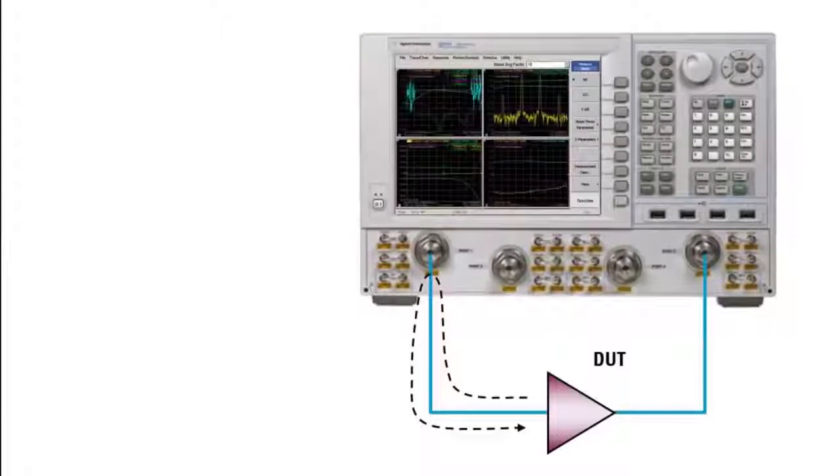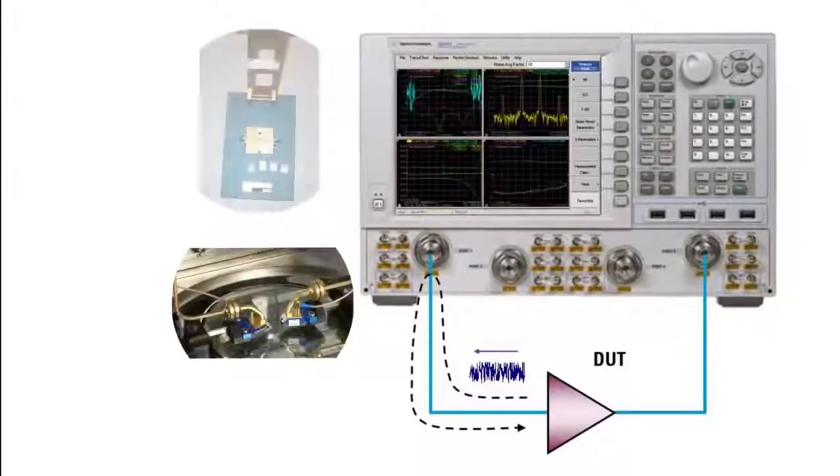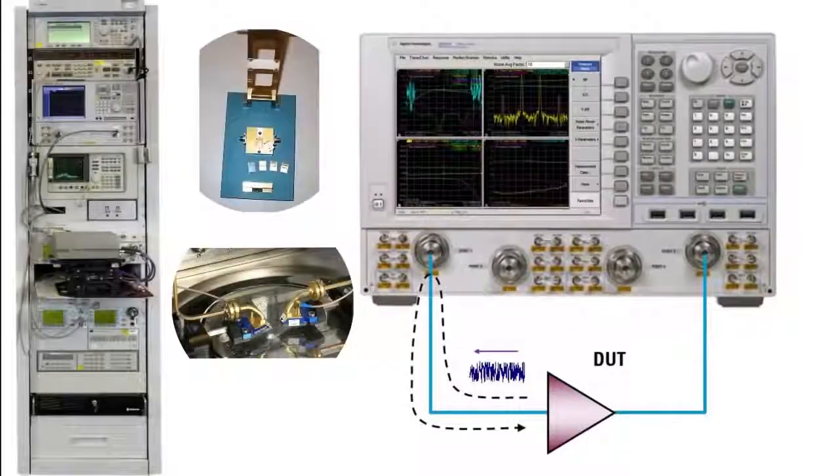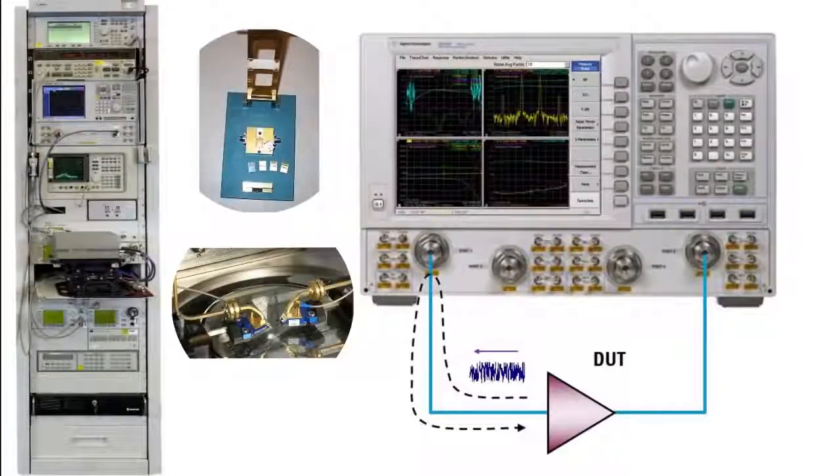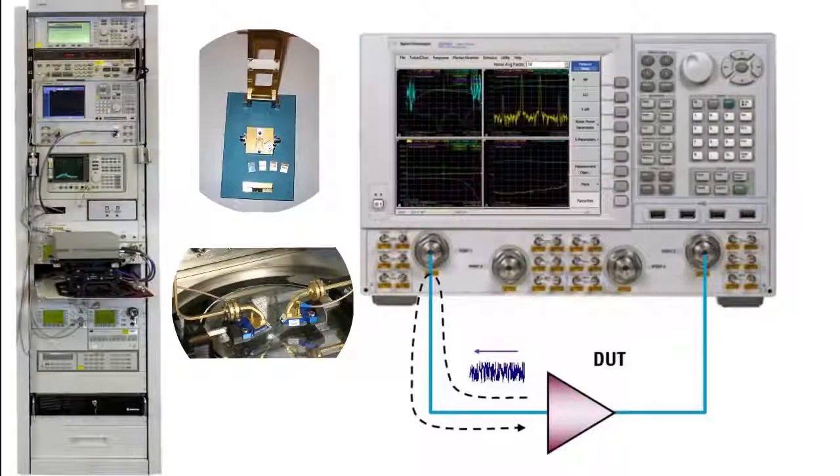Another major source of error comes from the noise coming out of the DUT's input and interacting with the non-50 ohm source match. This is especially troublesome in on-wafer, in-fixture, or automated test environments where the system source match is degraded by the additional hardware required to connect the analyzer to the DUT.